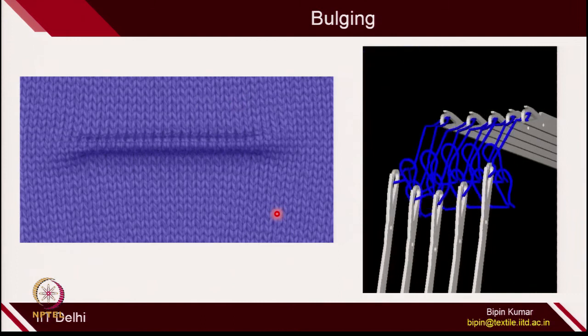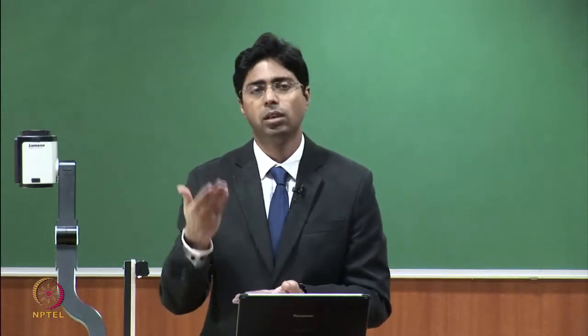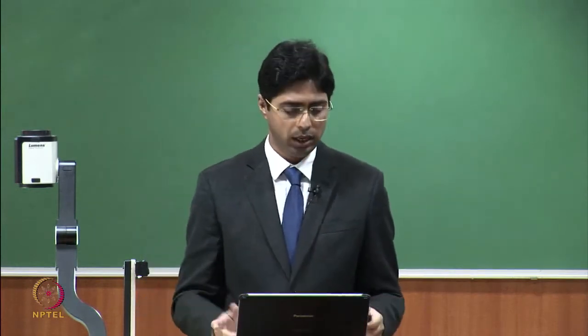Bulging is not so popular in fabric design, but if you want to give some kind of 3D look to the fabric structure, it's one way of getting a bulging effect on the fabric surface. 3D looks can also come out when you use link structure — in the last lecture I showed you that in link when you have technical front and technical back together, because of the curling nature, the surface of the fabric will raise. That is another aspect to create 3D architecture on the fabric surface, and bulging is another one.